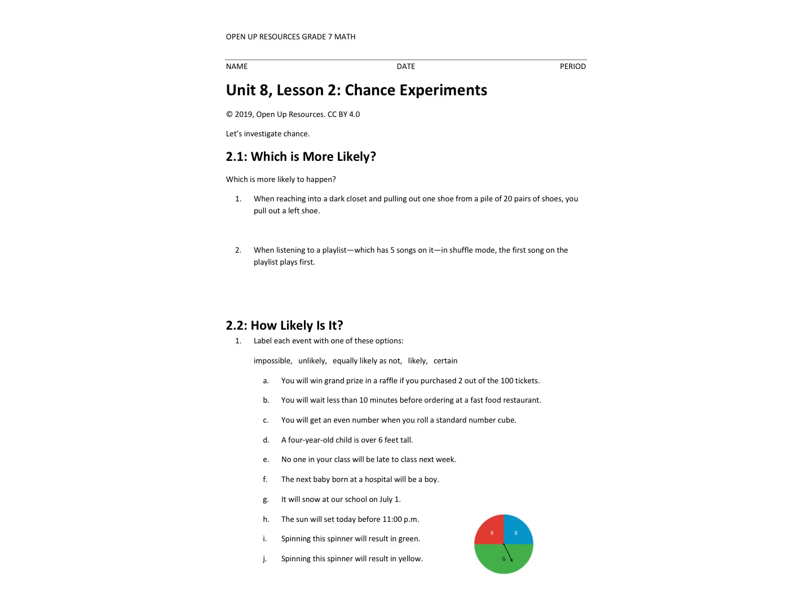Hello, welcome to Unit 8, Lesson 2, Chance Experiments. The learning objectives today are to be able to describe the likelihood of events using the words impossible, unlikely, equally likely as not, likely, or certain. And also to be able to tell which event is more likely when the chances of different events are expressed as fractions, decimals, or percentages.